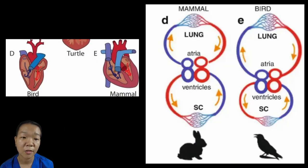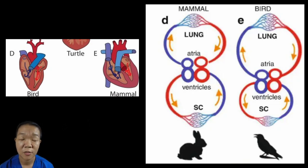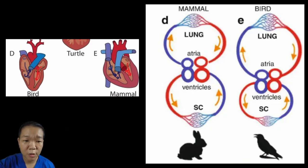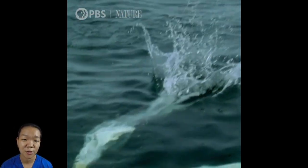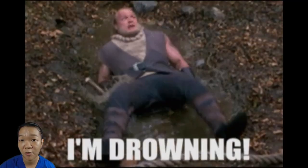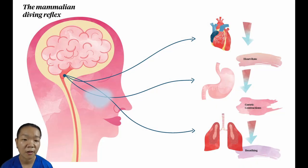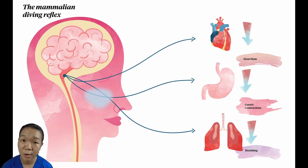Bird hearts are very similar to mammalian hearts, but the same four-chambered configuration arose independently in both groups, most likely because of the demands of an endothermic and homeothermic lifestyle. Their hearts have a complete separation of the pulmonary and systemic circuits, so there is no way to redirect blood flow even if the animal holds its breath. Birds and mammals that do dive underwater are stuck with a suboptimal version of a heart — very effective on land, but not in water. Their workaround is slowing their heart rates, decreasing blood supply to less important organs, and switching to anaerobic metabolism.